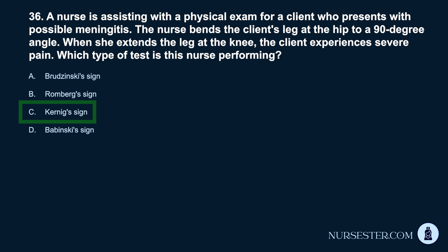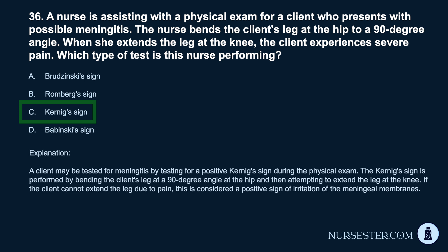Correct answer: C. Kernig's sign. A client may be tested for meningitis by testing for a positive Kernig's sign during the physical exam. The Kernig's sign is performed by bending the client's leg at a 90-degree angle at the hip and then attempting to extend the leg at the knee. If the client cannot extend the leg due to pain, this is considered a positive sign of irritation of the meningeal membranes.